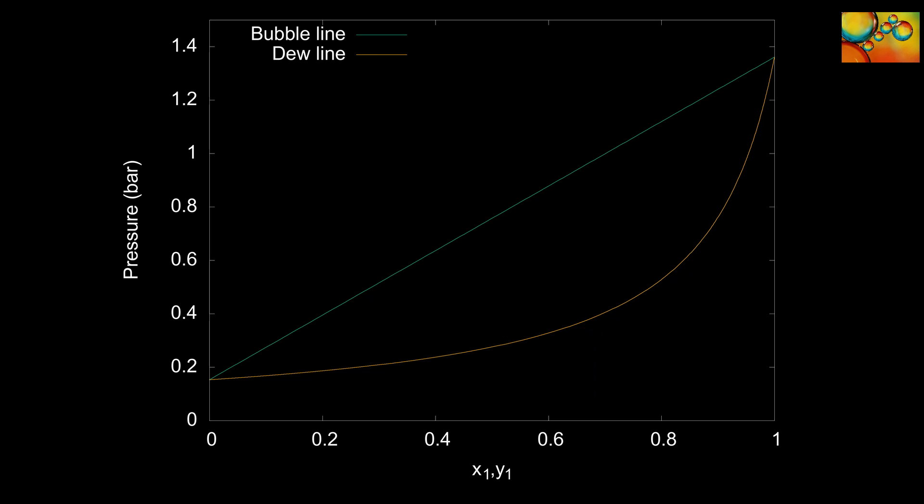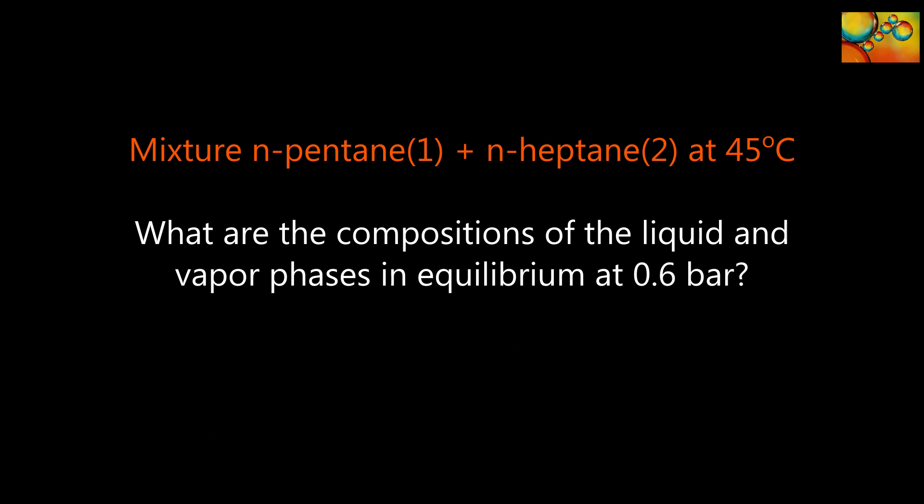The yellow line represents dew point conditions for mixtures of different compositions. The states of the system located between the bubble and dew point lines have a vapor and a liquid phase in equilibrium.